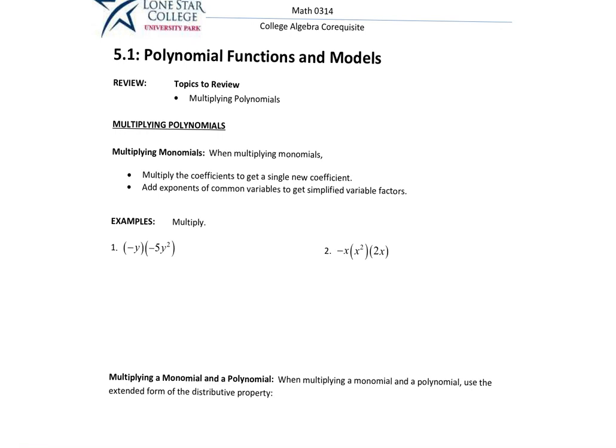In this video, we're going to talk about how to multiply polynomials. A polynomial — the word 'poly' means more than one or multiple, and the word 'nom' (N-O-M) means names. So we're naming certain terms, or these more-than-one term names. The first thing we start off with is what we call a single term — we call that a monomial.